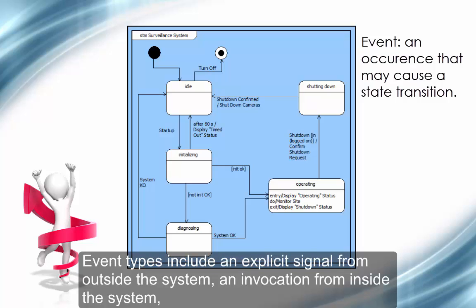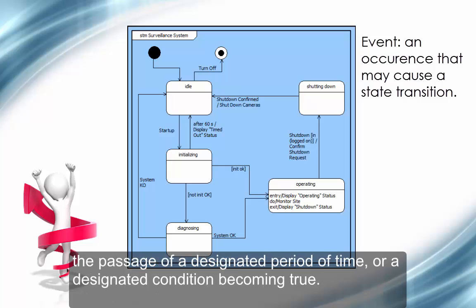Event types include an explicit signal from outside the system and invocation from inside the system, the passage of a designated period of time, or a designated condition becoming true.